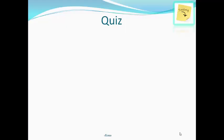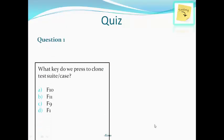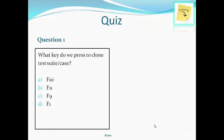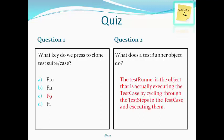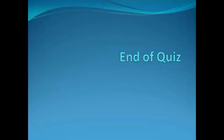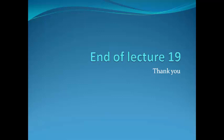Quiz time. Question 1: What key do we press to clone a test suite or test case? Options are F10, F11, F9, or F1. Question 2: What does a test runner object do? The answer to question 1 is C — F9. The answer to question 2 is that the test runner is the object that executes the test case by cycling through the test steps and executing them. This is the end of the quiz and the end of lecture 19.